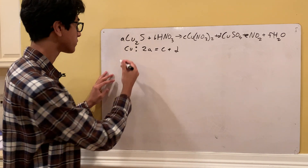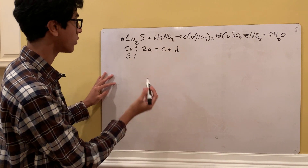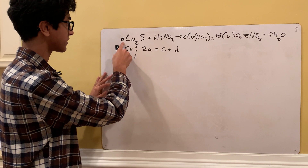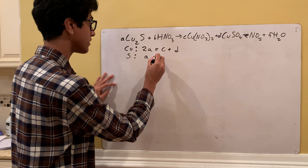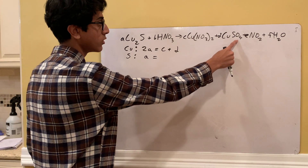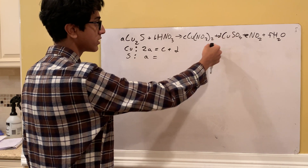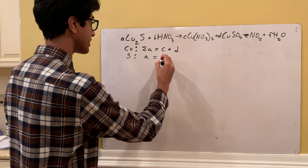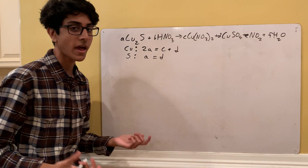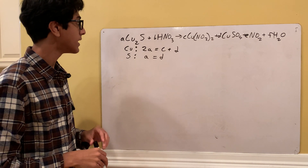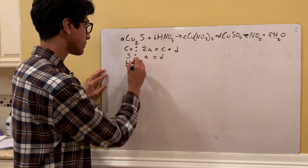Now let's set up the equation for S. On the left side there's one S with coefficient A and no subscript, so just A. On the right side, S also has no subscript and the coefficient is D, so just D. That gives us A = D, meaning these two coefficients are equal, which will be very useful.